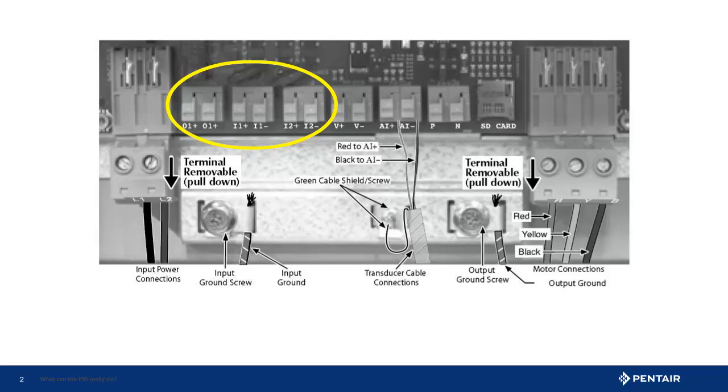An input tells the drive to do something. From the factory input and output are unprogrammed, but can be programmed to run, fault, or run at a secondary pressure depending on how you program the input and what is connected. An output tells the observer what the drive has done or to do something when the programming calls for the relay to close. Remember from the factory the relay is not programmed but can be programmed to fault or run.